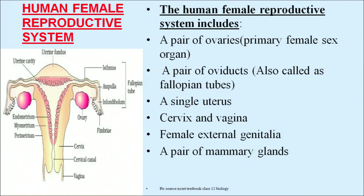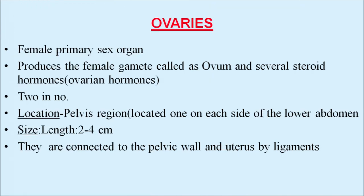The human female reproductive system includes a pair of ovaries, which are the primary female sex organs; a pair of oviducts, also called fallopian tubes; a single uterus; cervix; vagina; female external genitalia; and a pair of mammary glands. The ovaries produce the female gamete called the ovum and several steroid hormones called ovarian hormones. The ovaries are two in number, located in the pelvic region, one on each side of the lower abdomen.